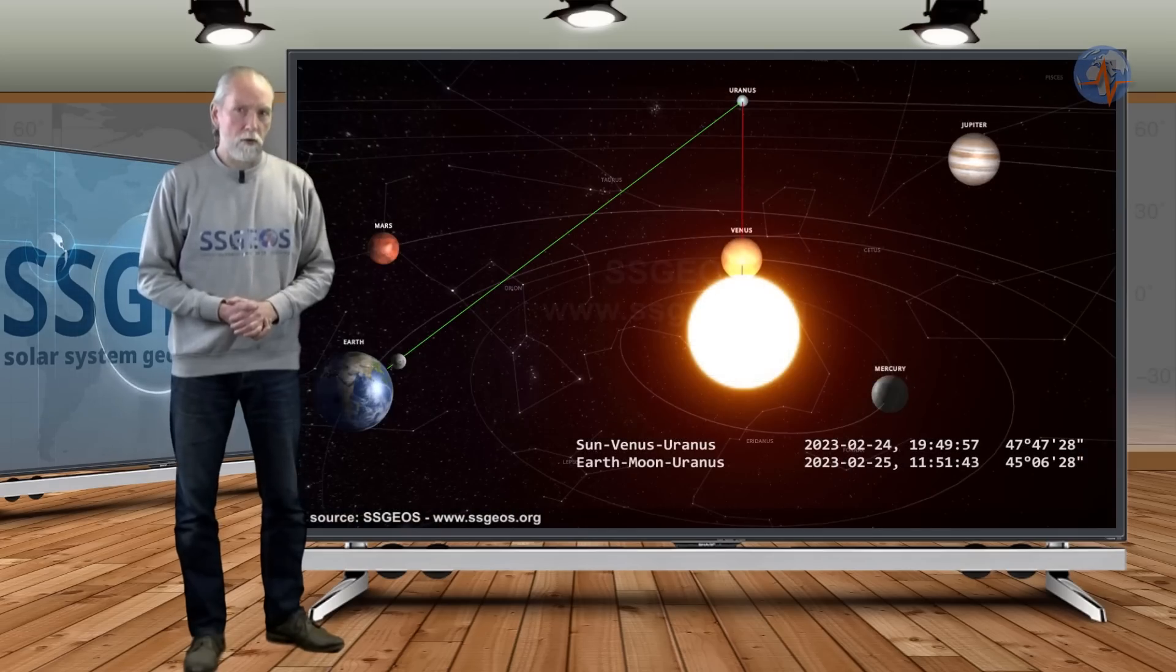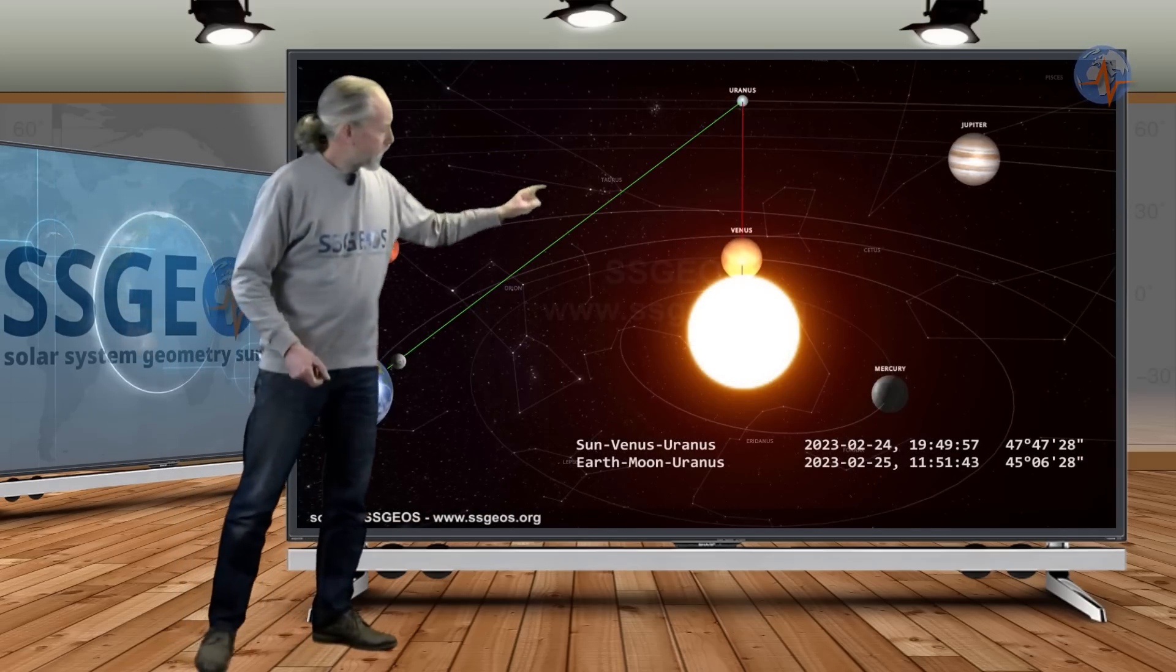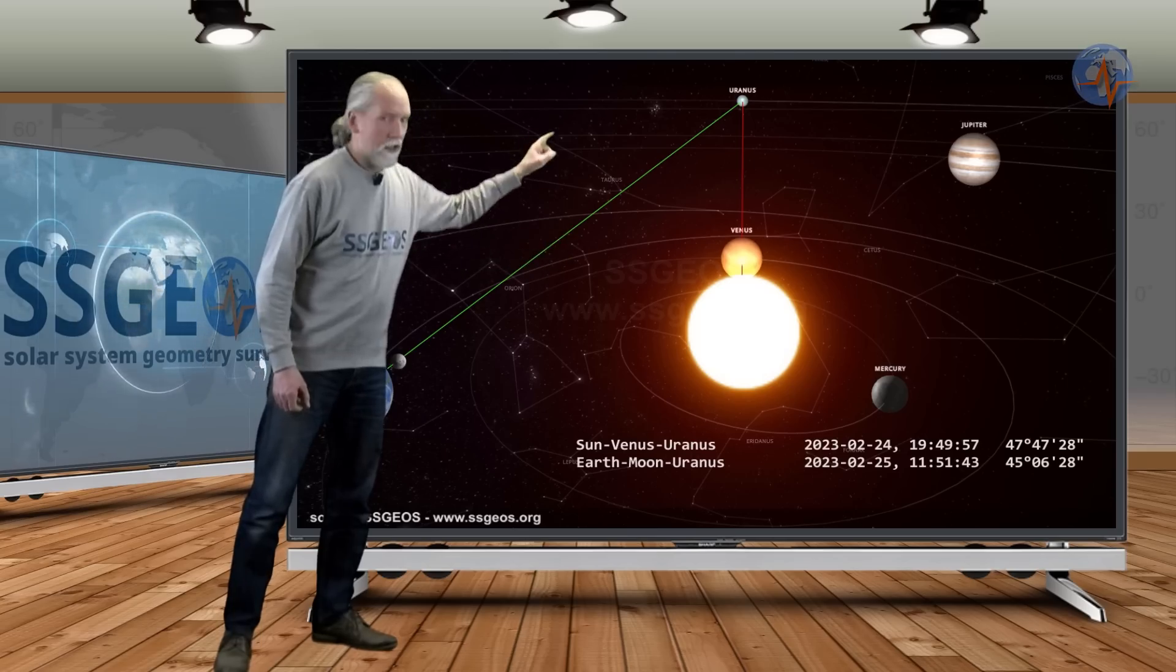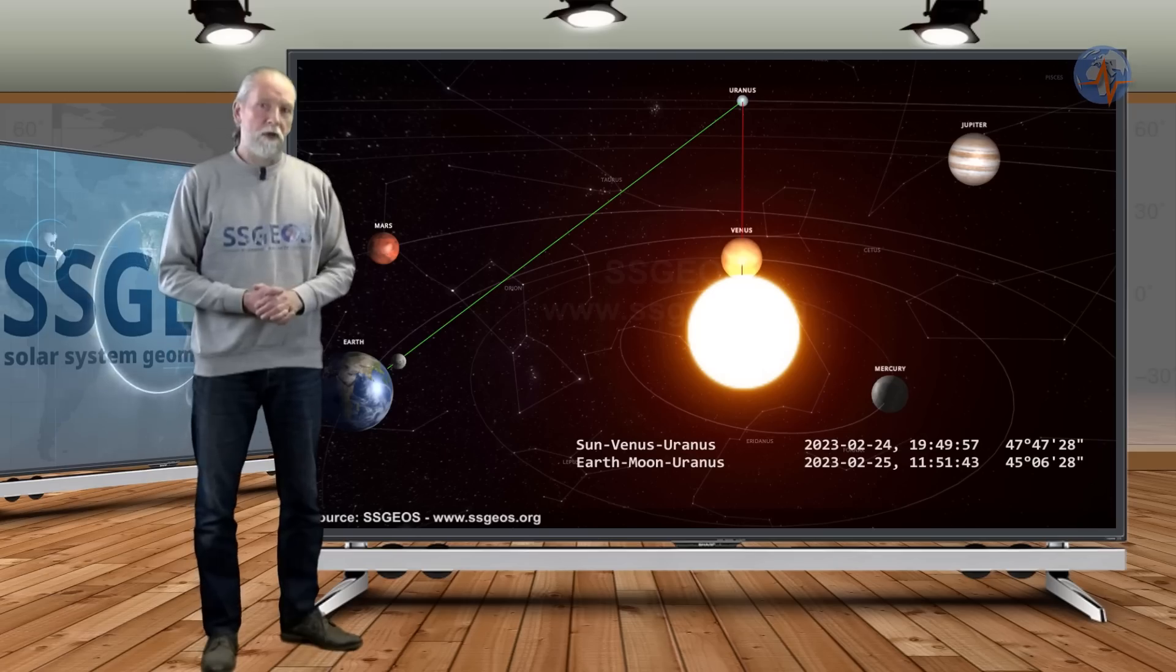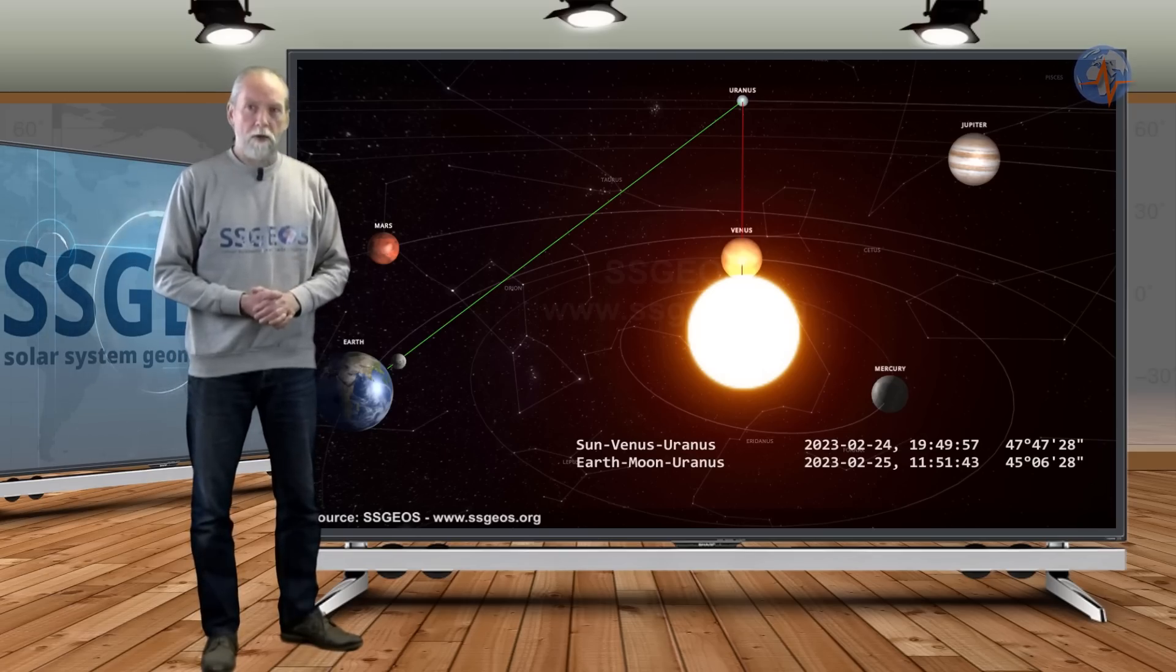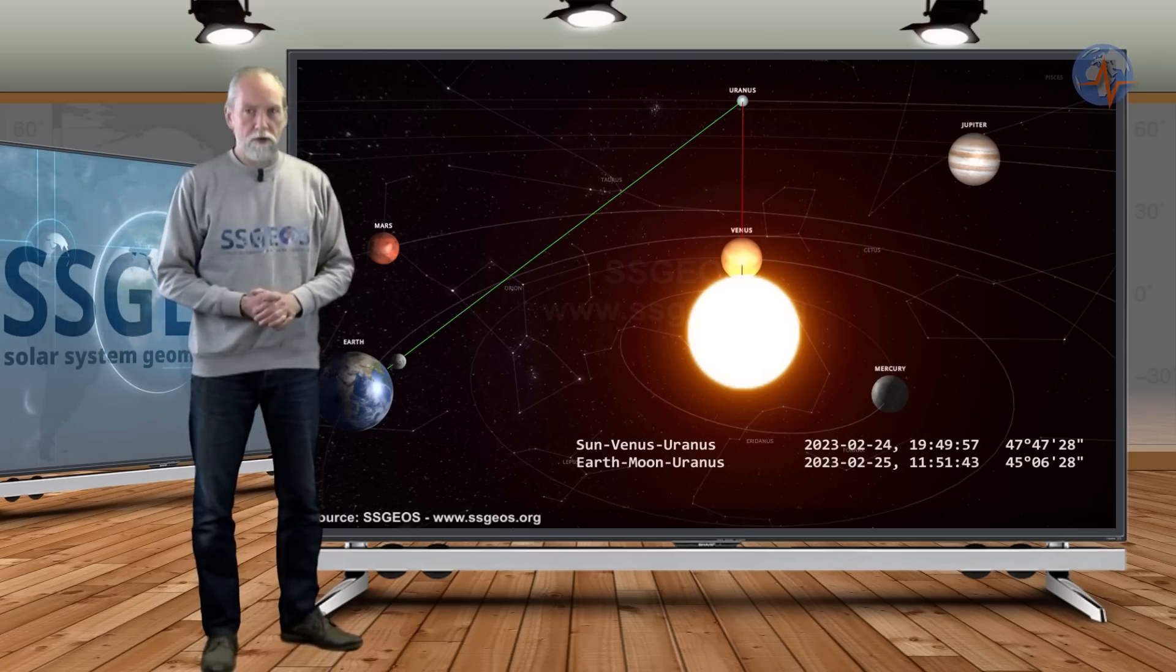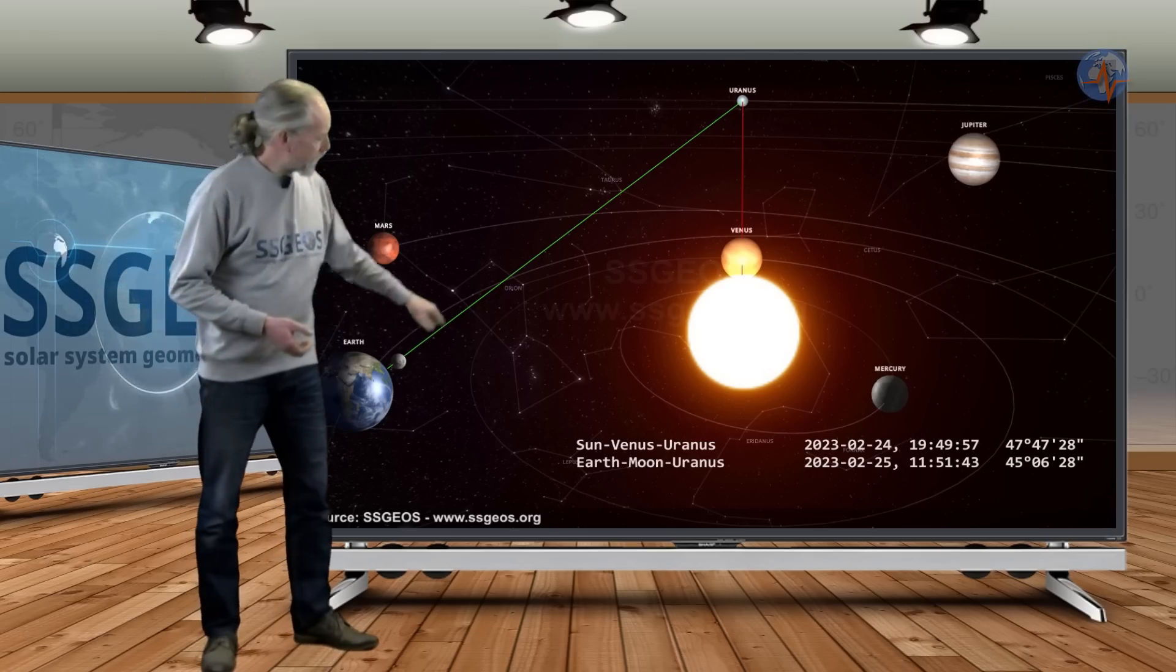Let's have a look at the solar system. The planetary conjunction is with the Sun, Venus and Uranus. That is later on the 24th. I marked it with the red line and it is followed by a lunar conjunction also with Uranus early on the 25th and I marked that conjunction with the green line.